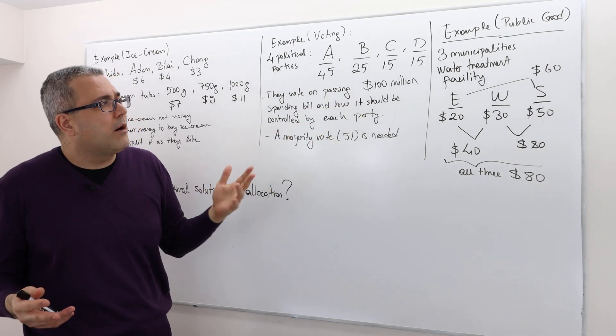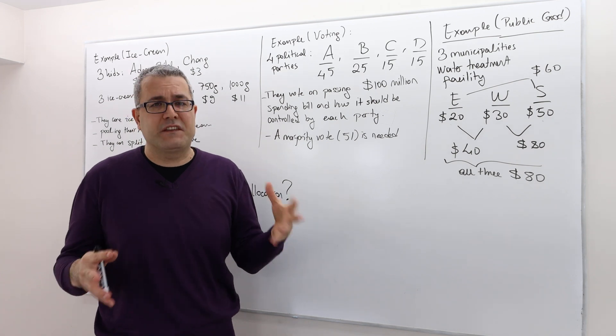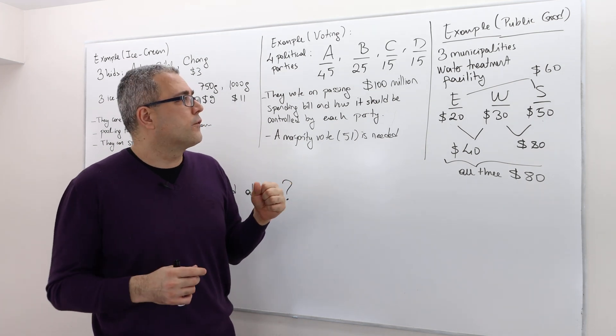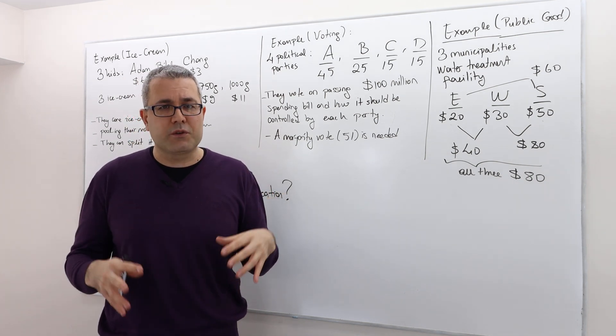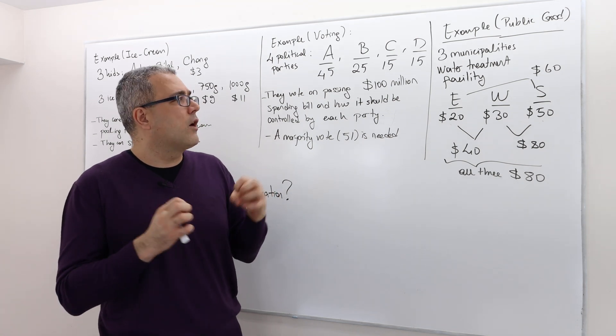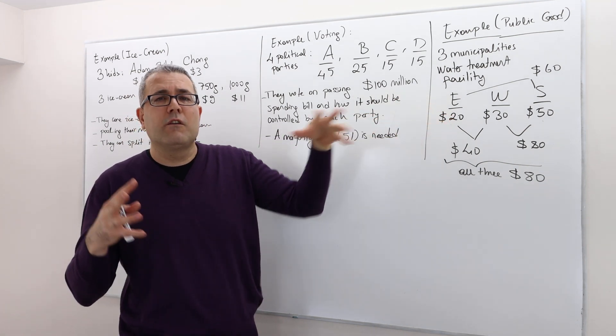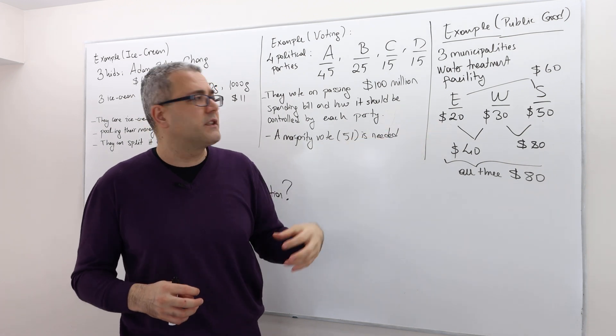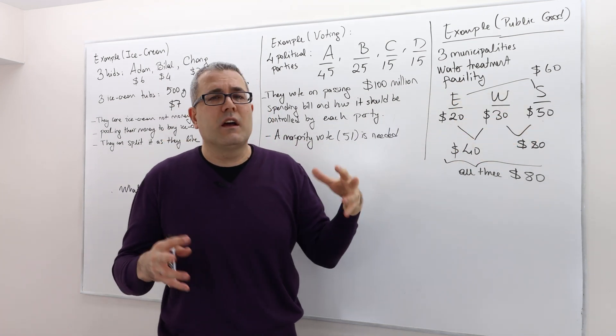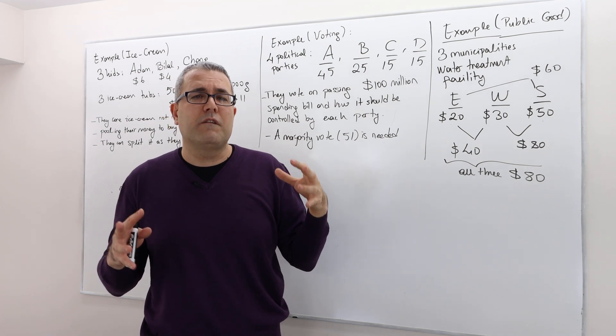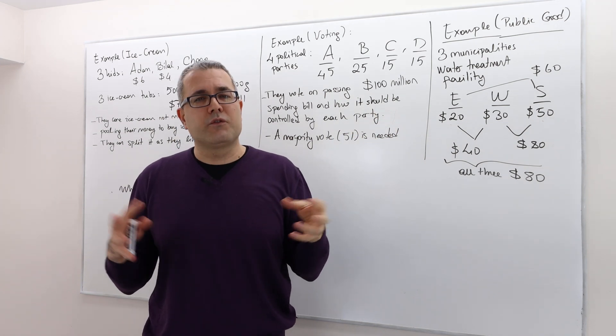And then the third example I have, I call it public good. There are three municipalities, and they need a water treatment facility for their municipality. Obviously they can build these facilities by their own resources, which will help only their own municipalities. For example, if municipality E builds it for its own municipality alone, it's going to cost them 20 million dollars. For municipality W, it's going to cost them 30 million dollars. And municipality S is going to cost them 50 million dollars, so probably municipality S is bigger than the other two.